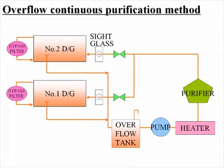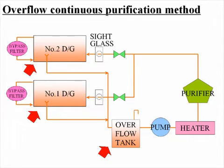The lube oil contamination level during engine operation can be kept down to a fixed level by using the continuous overflow purification system with a specialized tank. Transfer the lube oil in the sump tank and overflow tank to the settling tank to clean the tanks on a periodic basis.